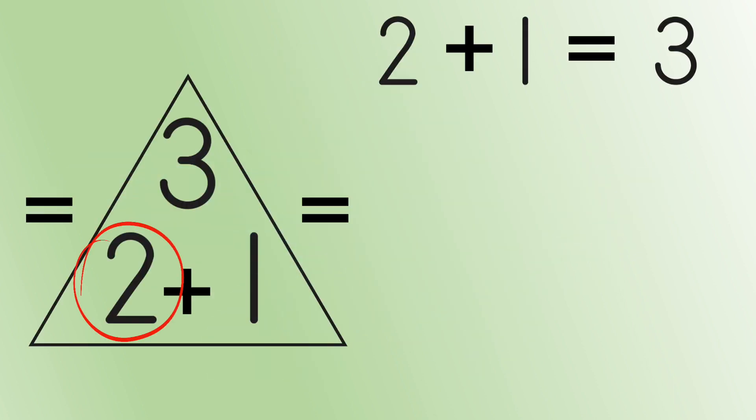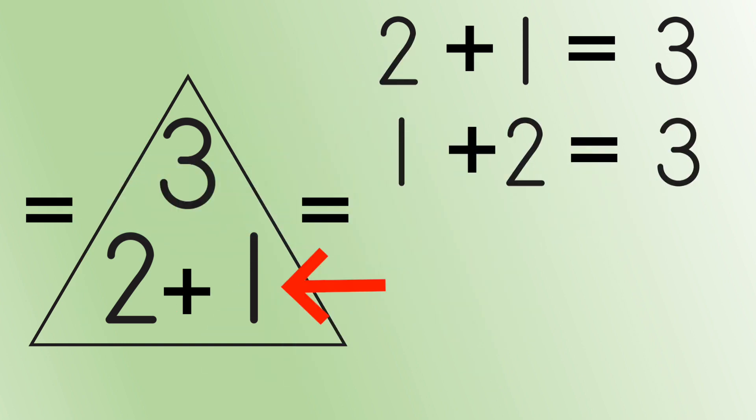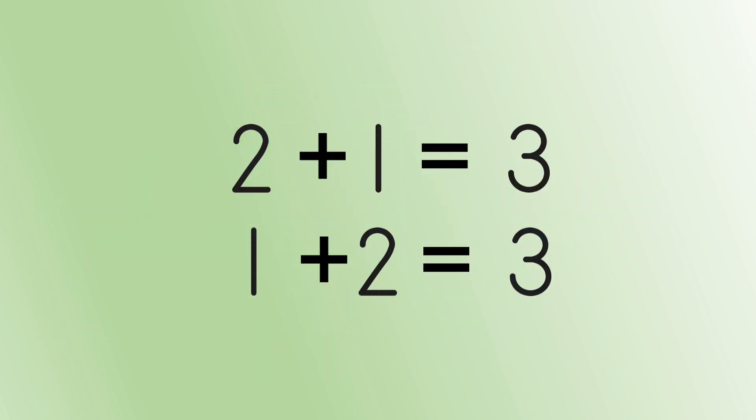2 plus 1 equals 3. He started at the other side and did the same thing. 1 plus 2 equals 3. Baxter now had two addition facts.